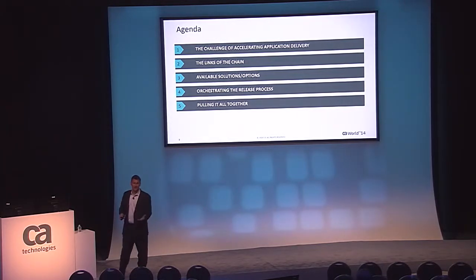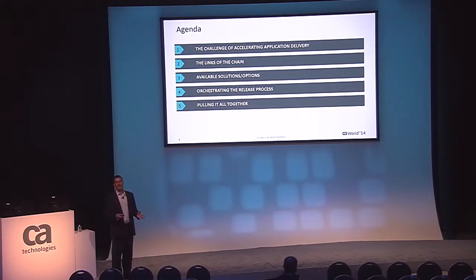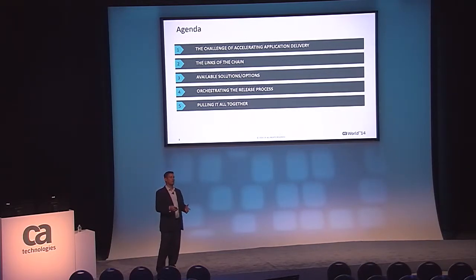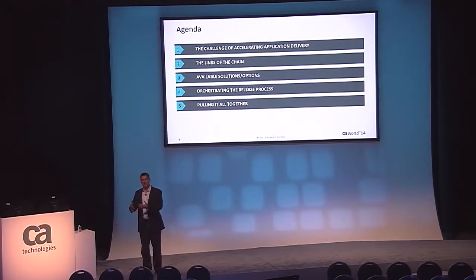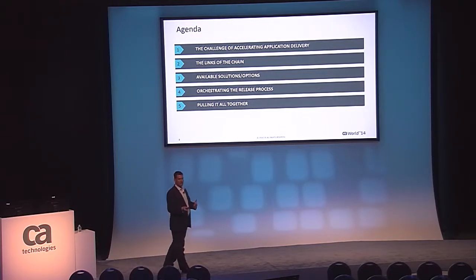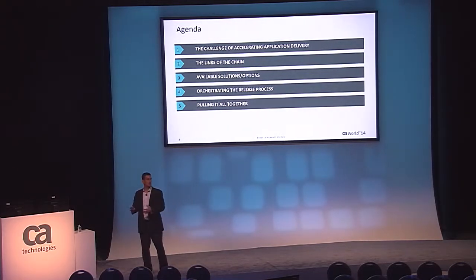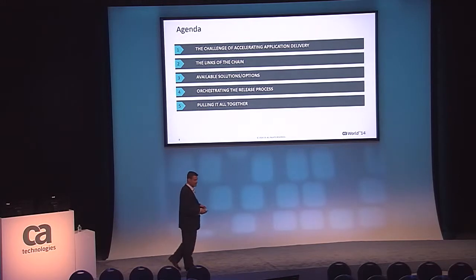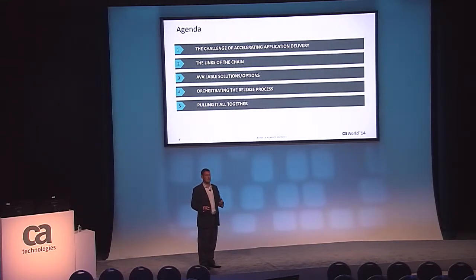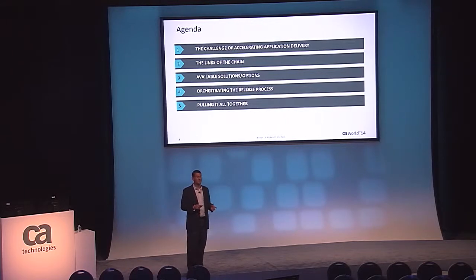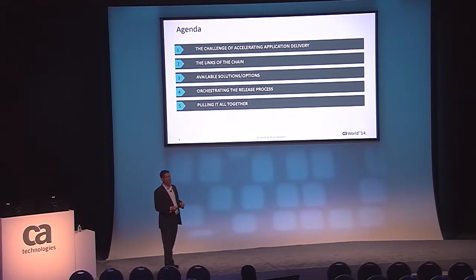We've got a little agenda here. We'll talk about some of the challenges these companies face. We'll talk about the links in the chain — there are actually a lot of different tools that customers are using when they start to take on continuous delivery. We'll talk about those tools and some of the options, because some of those tools you can actually use to do multiple things. Then we'll talk about how you orchestrate the release process for more advanced deployment styles like canary deployments, red-green deployments, or dark deployments. These are popular with web-scale IT shops.